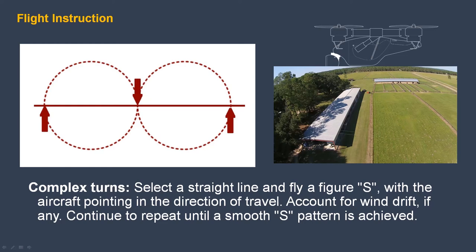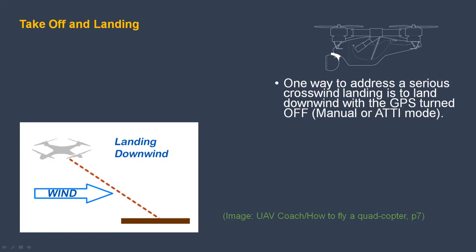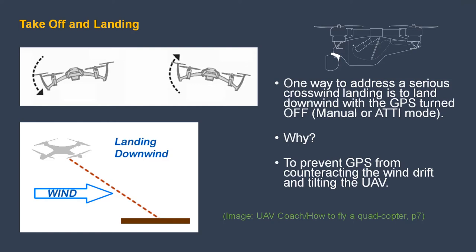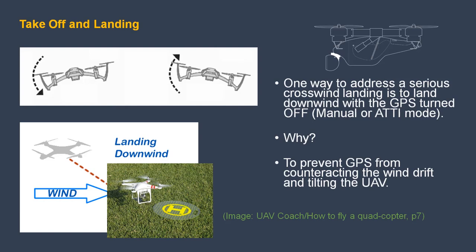The next step from a simple circle is two circles — we call that complex turns. Select a straight line, for example a fence line, then fly a figure S with the aircraft pointing in the direction of travel. Account for wind drift and continue to repeat until you can achieve a smooth S pattern. One thing that can mess with any aircraft landing is a crosswind. One way to address severe winds on landing is to land downwind with the GPS turned off — we call that manual or ATTI mode — to prevent the GPS from counteracting the wind drift and tilting the UAV. Use a landing pad to prevent sand and dust from being thrown up into the motors.